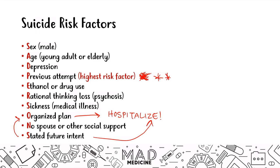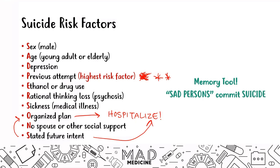The three things you should definitely take away are: first, a previous attempt puts someone at higher risk; second, if they have an organized plan, hospitalize them; and third, if they have stated a future intent, ask about an organized plan, and if they have one, commit them to make sure they don't commit suicide.